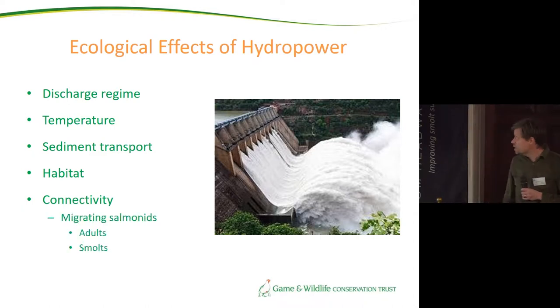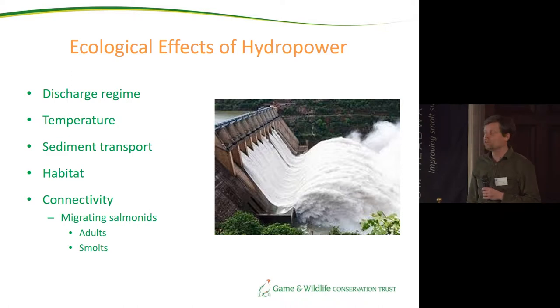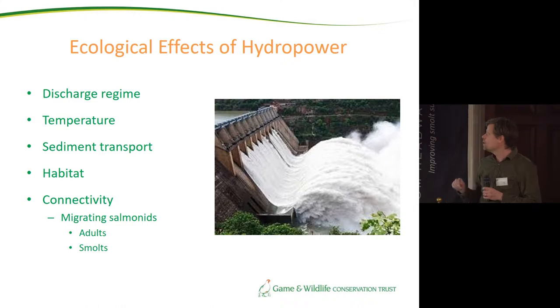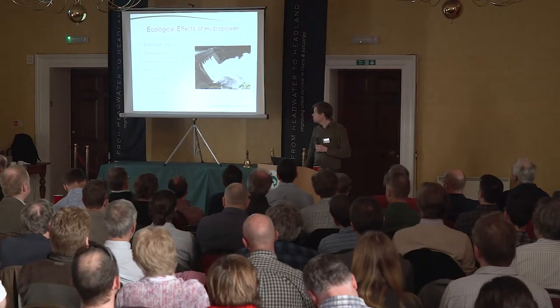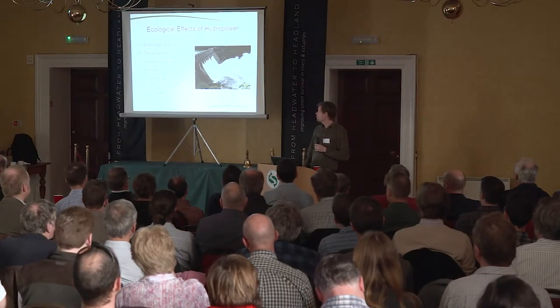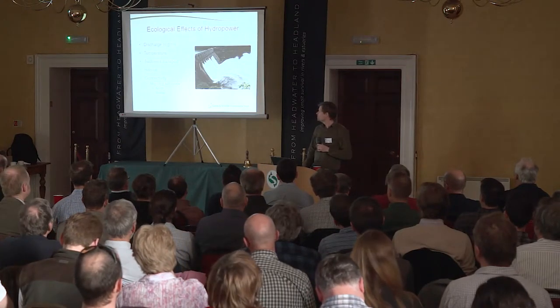Migrating species will obviously find a dam a little bit difficult to negotiate. In the context of salmon, there has been considerable work done particularly in trying to mitigate the effect on upstream migration of adults, but maybe less so on the downstream migration of smolts, even though that's an equally important part of the life cycle.